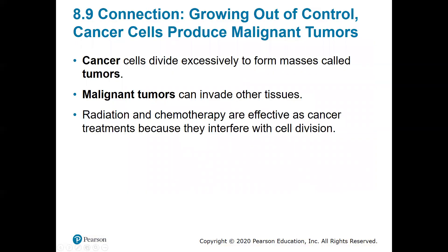Growing out of control produces cancer cells. Cancer cells, if not caught by the body, can divide excessively and form masses that we call tumors. You can have benign cancer, which grows in a part of the body where it is not affecting tissue or organ function. However, benign tumors can become malignant — malignant tumors will invade other tissues and start to affect normal body function.